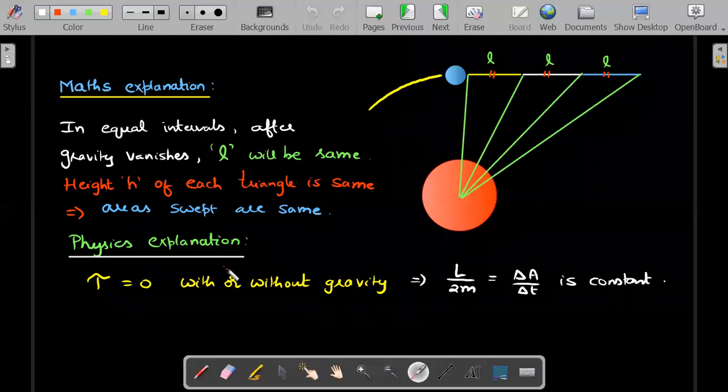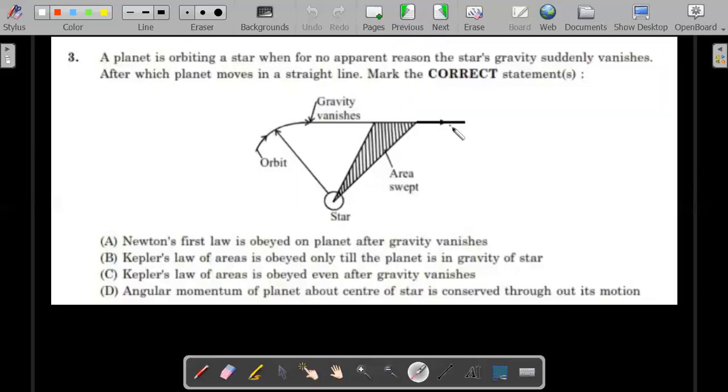So here the solution. I'll give both math and physics explanation. First statement, I think Newton's second law or first law is obeyed on planet after gravity vanishes. I think the statement of first law talks about the orbit of this particular planet would be a straight line and moves in uniform motion until unless acted upon by external force. So the famous childhood definition that we take up of Newton's first law. So I think the first statement is a correct statement. No doubts asked. Now laws of areas B and C is the two important statements. Is it obeyed while it is under gravity or is it obeyed even after gravity vanishes is a very interesting idea.